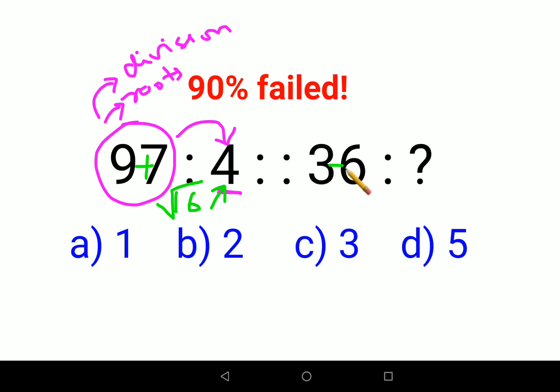So when I do 3 plus 6 and put it under a root, I get 9, and the root of 9 gets you 3. So option C is my answer for this particular question. That's it for today. I will see you in the next video.